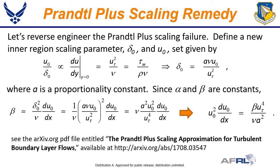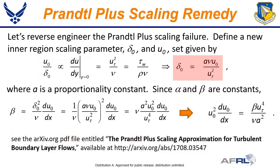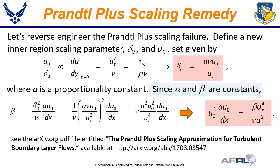So how do we fix this? What's the remedy? The fix is pretty straightforward. We essentially reverse engineer the failure and define a new set of scaling parameters such that the ratio is proportional to the wall shear stress. I have shown theoretically that this must be the case — see the paper described below. Defining the ratio is not enough, though. To flesh out the definition, we require that alpha and beta be constants. With those definitions, we end up with u_0 and delta_0 defined in terms of the friction velocity, just as was done by the Prandtl Plus scaling, but it's a little more complicated. We end up with these simple differential equations for u_0 and delta_0 shown here.